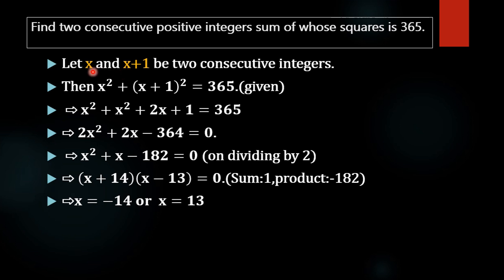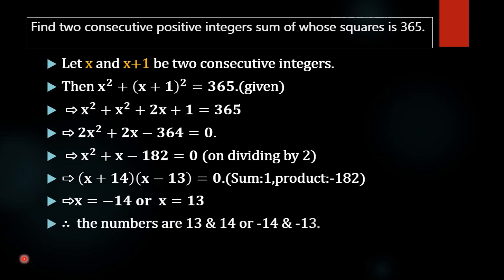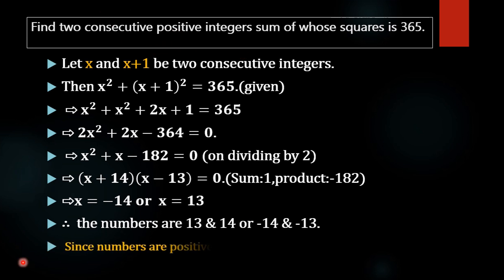If x equals negative 14, then the next integer is negative 14 plus 1, that is negative 13. So the numbers are either 13 and 14, or negative 14 and negative 13. Since we need consecutive positive integers, we take 13 and 14.